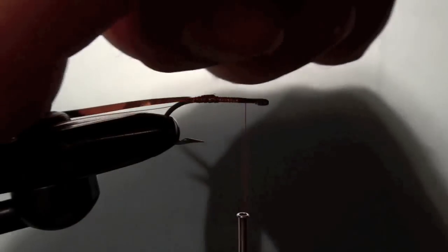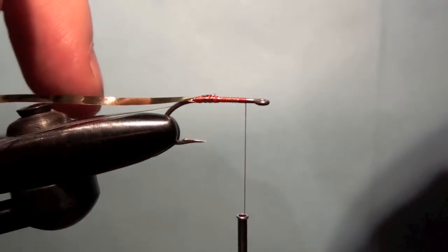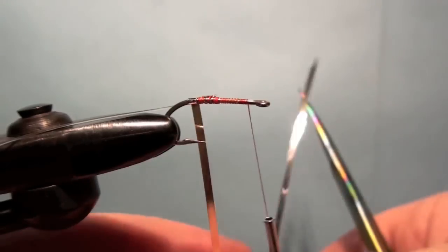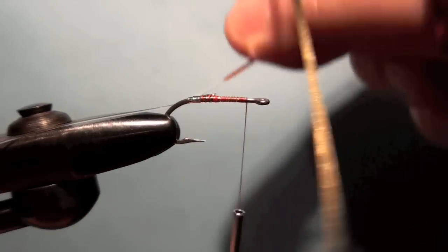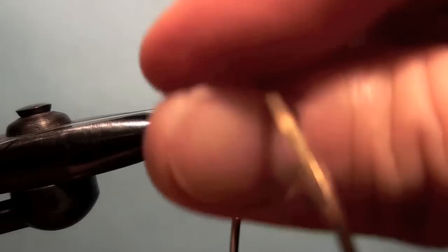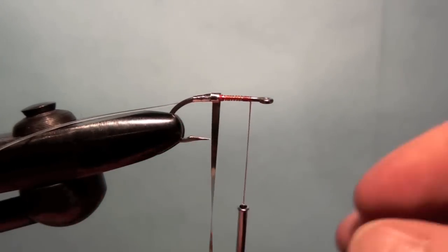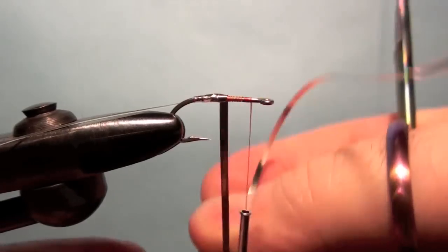So we're just going to go ahead and wind in our mylar, just like so, just wind that forward and I would keep the winds nice and tight. I also kind of overlap them maybe by half or so, just kind of figure that it makes a more durable fly.